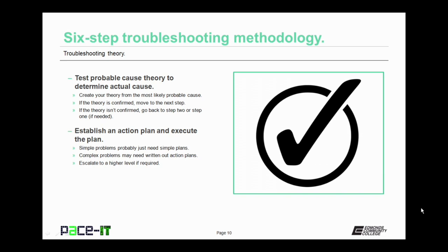Once you have your probable causes, now you need to test your theory of probable cause to determine if it's the actual cause. Your theory was created off of the most likely probable cause, so you need to figure out how you're going to test it. If the theory is confirmed, move on to the next step. If the theory isn't confirmed, go back to step 2 or step 1 if needed.